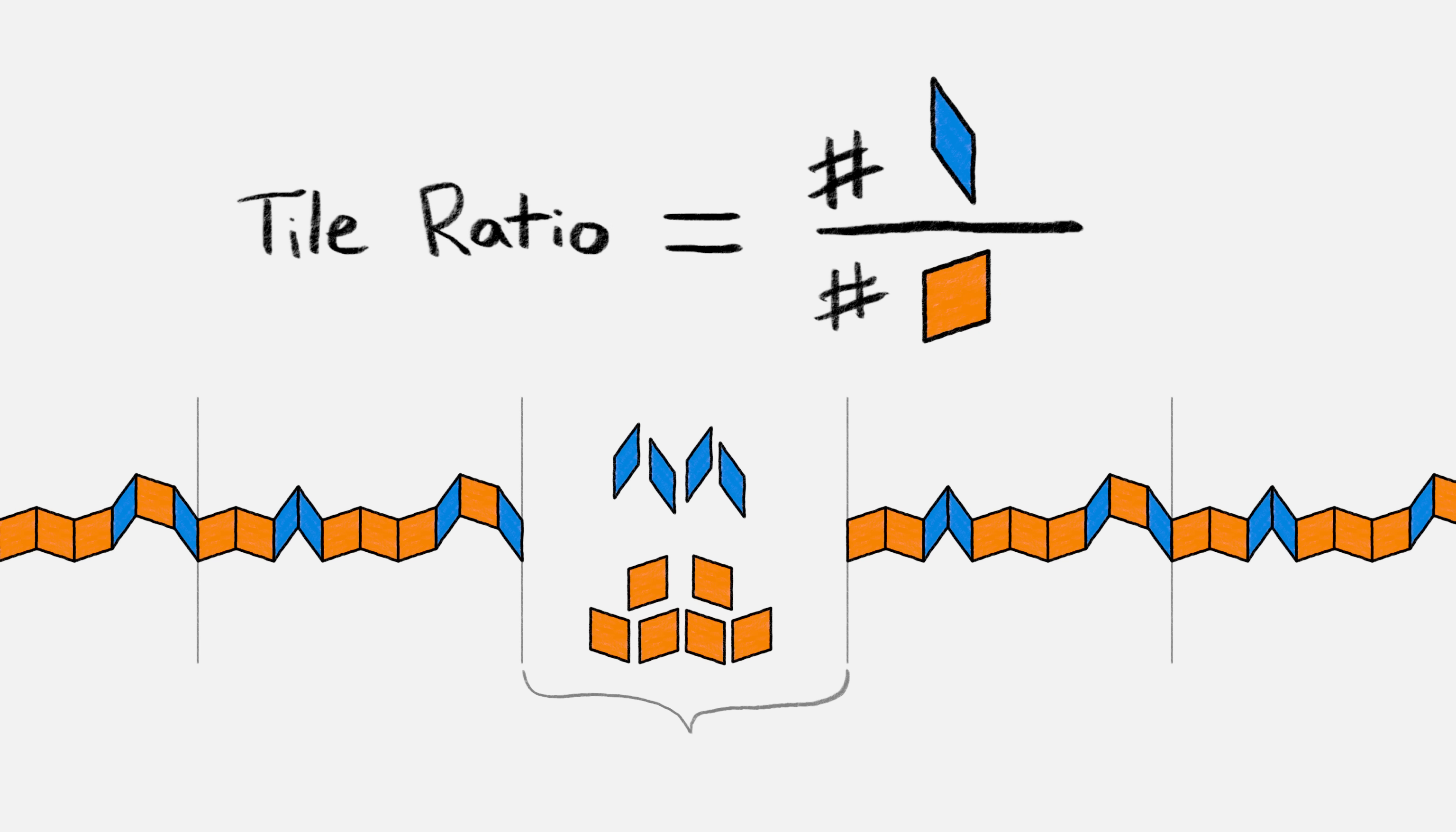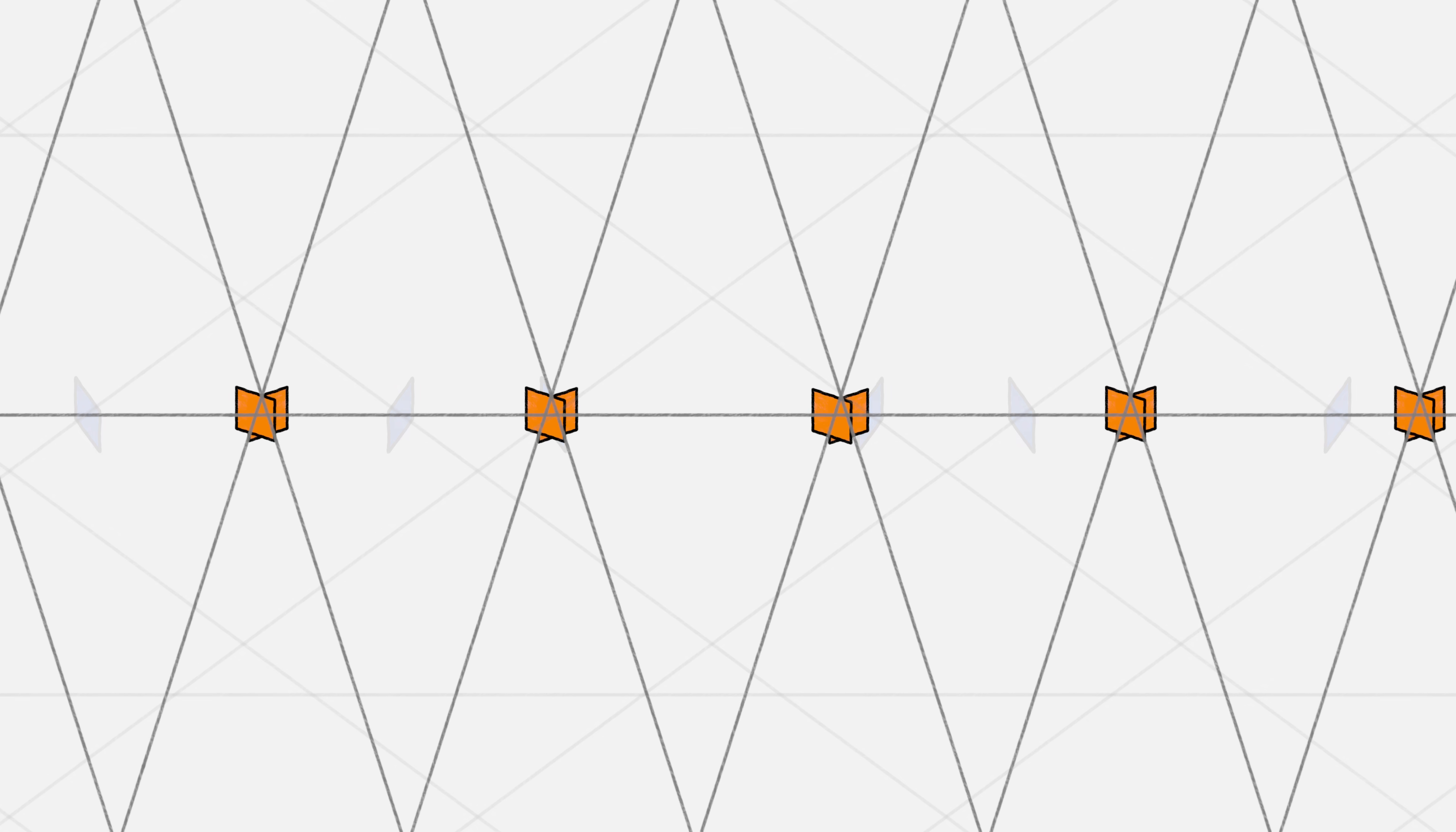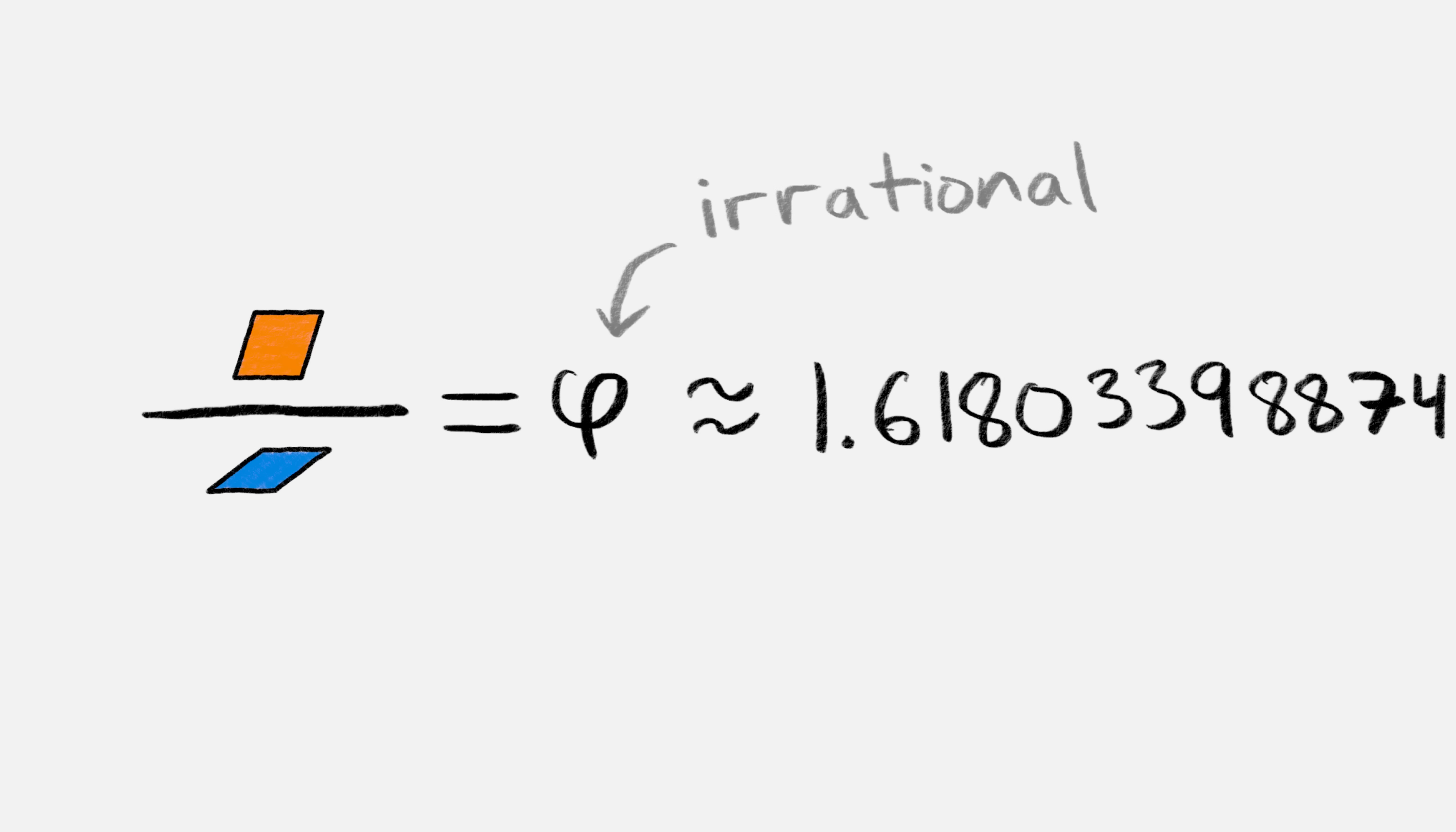there are six wide tiles for every four thin ones. In an actual Penrose tiling, we can directly calculate the ratio of thin tiles to wide tiles since the ribbons of tiles correspond to the intersections along a line of the pentagrid. The wide tiles are from the intersections with the 72-degree lines, and the thin tiles from the 36-degree lines. Some basic trigonometry shows that the spacing between 36-degree lines is 1 over the sine of 36 degrees, and the spacing between 72-degree lines is 1 over the sine of 72 degrees. So the ratio of wide tiles to thin tiles is the ratio of these, which happens to be the golden ratio, which is irrational. So there's no way the pattern could ever repeat. If it did, the golden ratio would have to be rational.